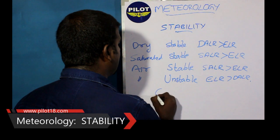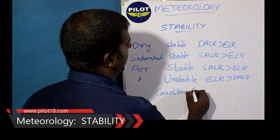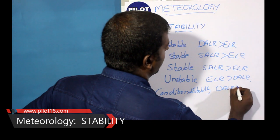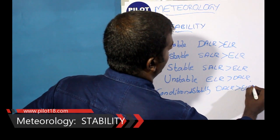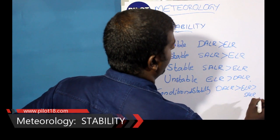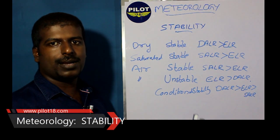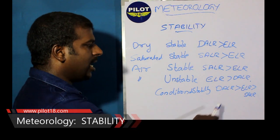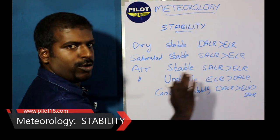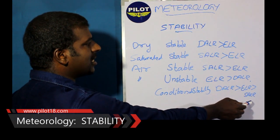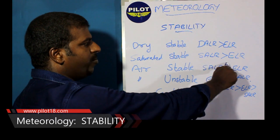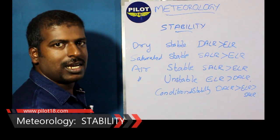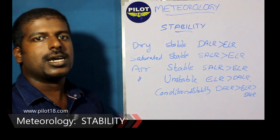Then comes conditionally stable — conditional stability. This occurs when DALR is greater than ELR, which is greater than SALR. In this case, stability is there but conditionally. ELR is less than DALR so it is stable, but ELR is greater than SALR — ELR should be less than SALR for it to be stable. If it is reversed, that means it is conditionally unstable.